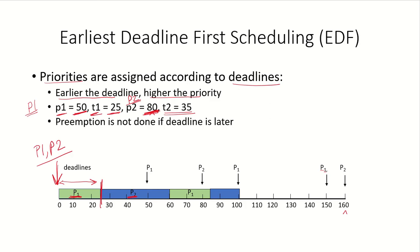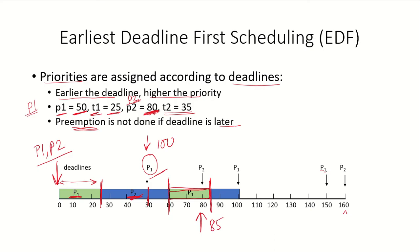When P2 starts running, at time unit 50, P1 arrives again in the system. At this point, the deadline of P1 is 100, but the deadline of P2 which is already running is 80. So P2 will not be preempted — P2 will keep running. Once P2 releases the CPU at time unit 60, P1 will be scheduled and will use it for 25 time units, finishing at 85, which is still earlier than its deadline of 100. So P1 has not missed its deadline.